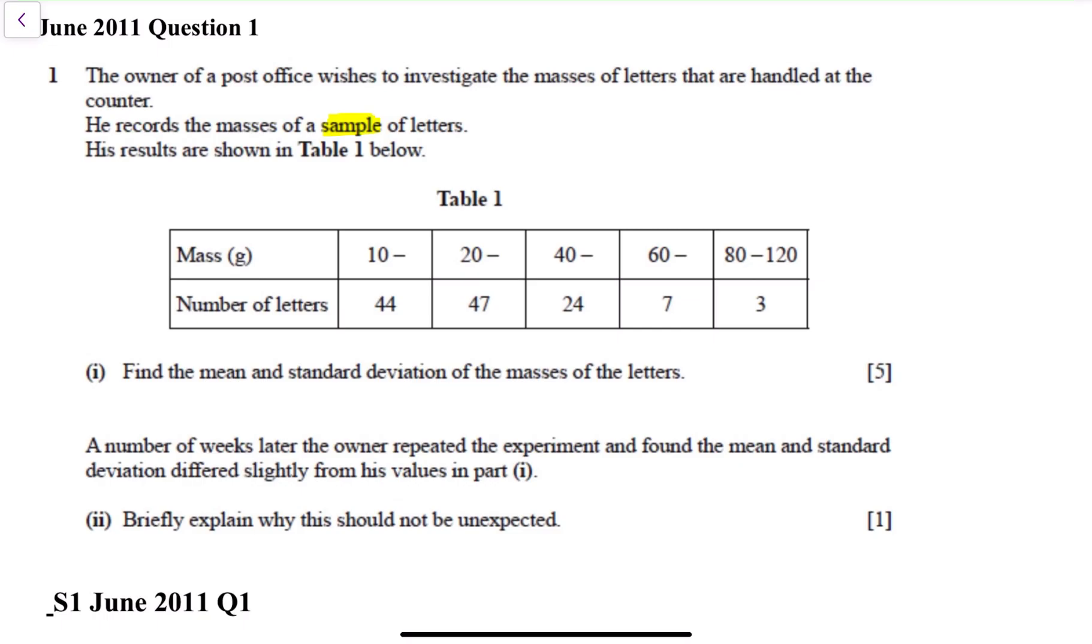His results are shown in the table below. So you've got the mass in grams: 10 dash, 20 dash, 40 dash, 60 dash, then 80 to 120, and the corresponding number of letters is 44, 47, 24, 7, and 3.